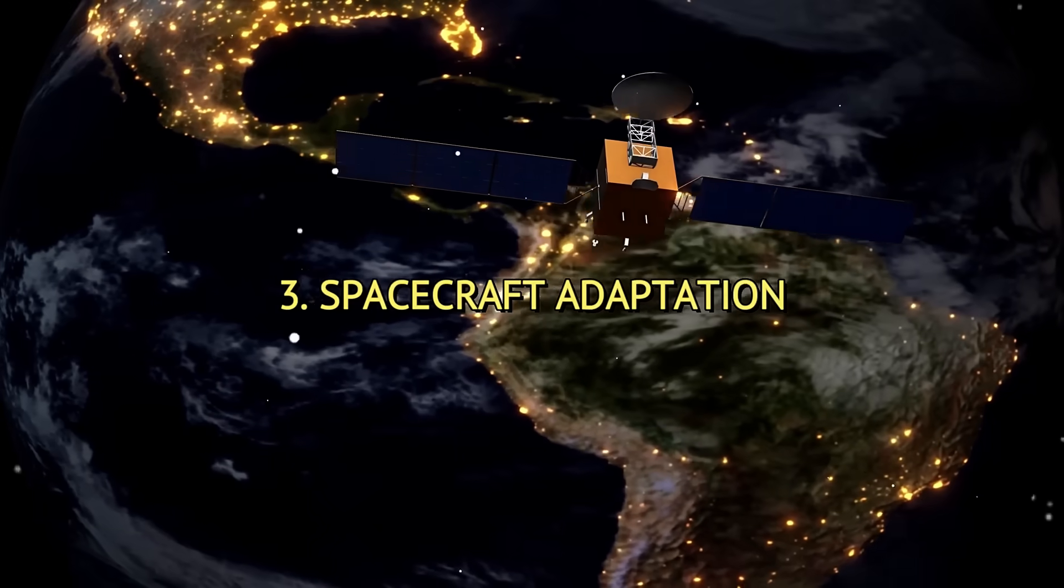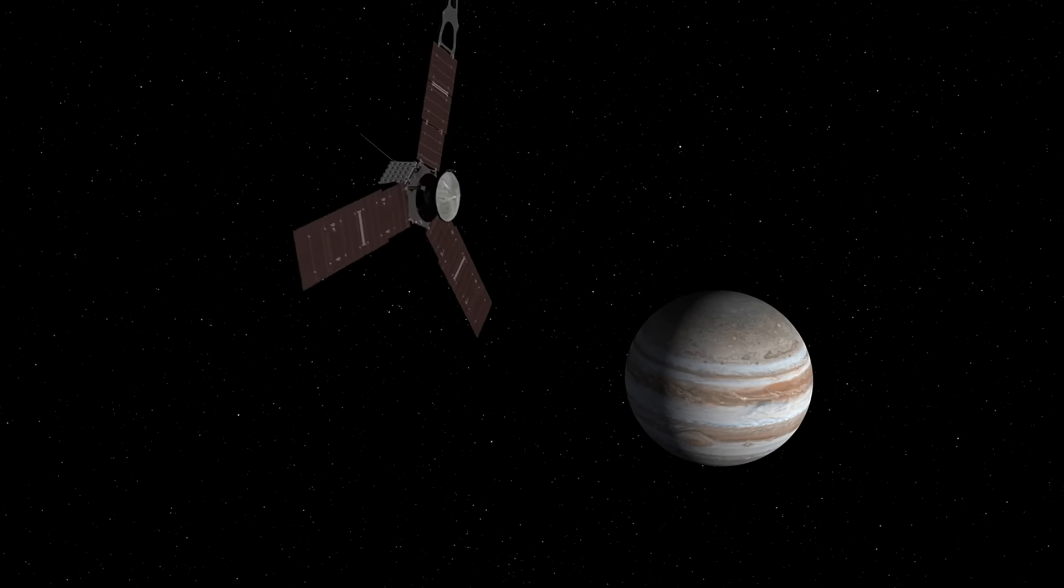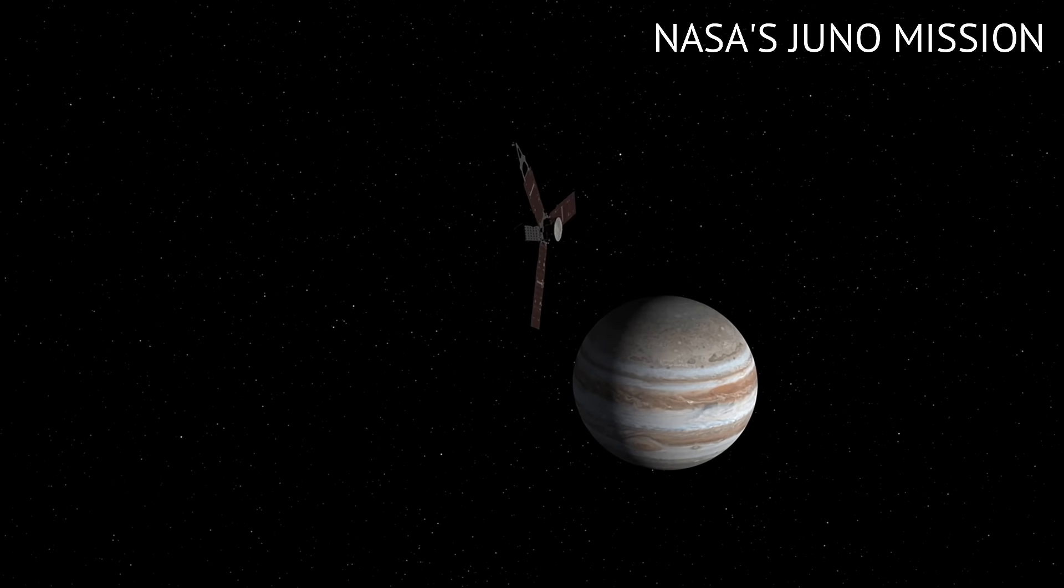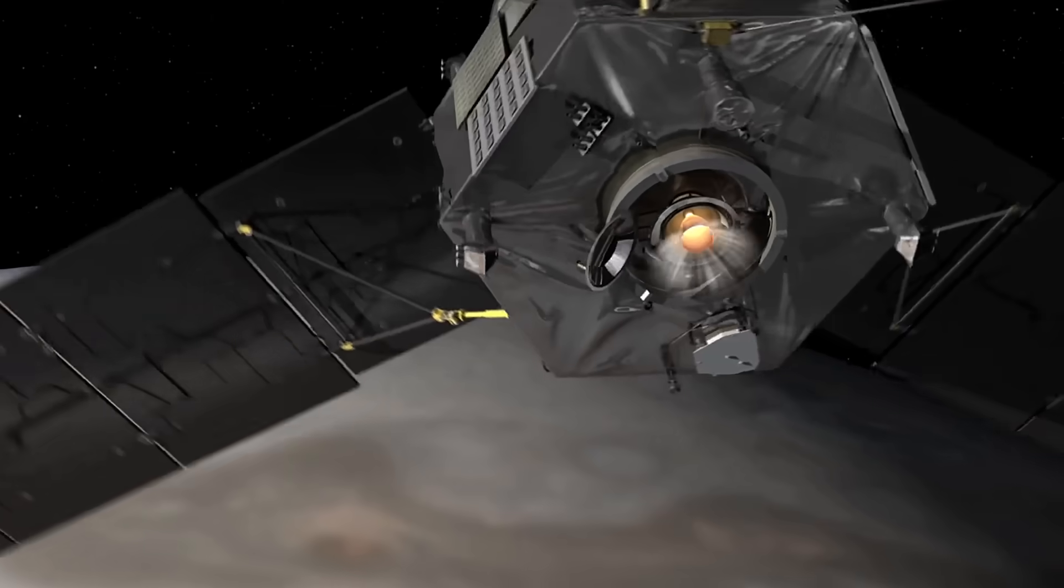Third, Spacecraft Adaptation. To withstand such a feat, the spacecraft requires advanced navigation to handle external thrust. Similar challenges have been addressed in precision navigation systems used in autonomous spacecraft like NASA's Juno, which adjusts its trajectory in Jupiter's intense radiation environment.